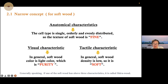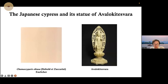For the narrow concept of softwood, the cell type is single, orderly and evenly distributed, so the texture of softwood is fine — these are the anatomical characteristics. In general, softwood color is light, which is purity — this is the visual characteristic of softwood. Softwood density is low, so it is soft — this is the tactile characteristic. Generally speaking, if one of the softwoods has these three characteristics, it is called a Shirawood. For example, Japanese cypress is a representative of our test world — we call it guanyin in Chinese.